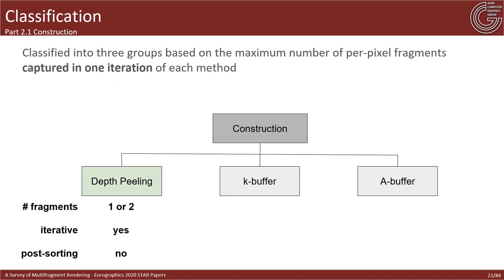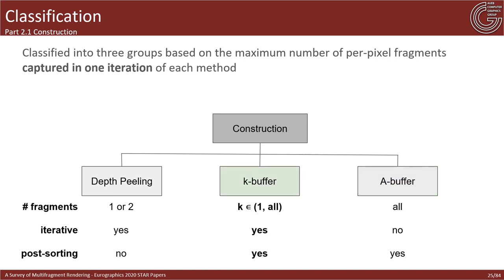Depth peeling methods process all fragment information through an iterative pipeline using few and bounded memory resources. Depending on the technique, each iteration uses one geometry pass and extracts a limited number of fragments — like one or two — with a guaranteed depth order, meaning sorting happens implicitly. On the other side of the spectrum, A-buffer methods aim to capture all fragments in a single iteration step, storing them into GPU-accelerated data structures during a single geometry rendering pass, followed by a post-sorting operation that reorders them by depth.